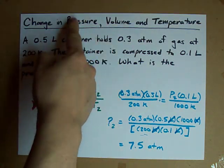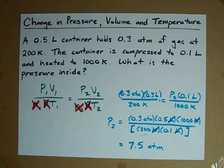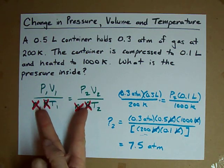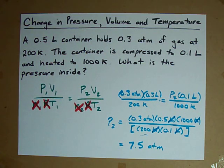Even if pressure, volume, and temperature are all changing at once, you can still use this initial formula, cross out what's constant on both sides, and solve the rest of it. Good luck.